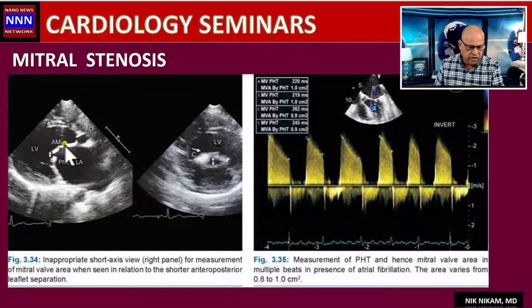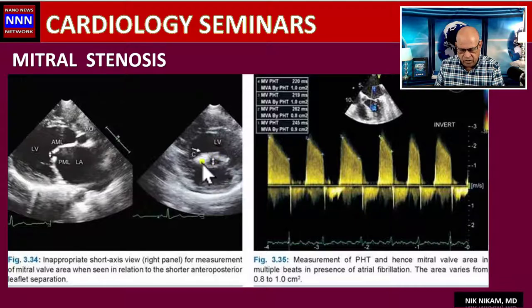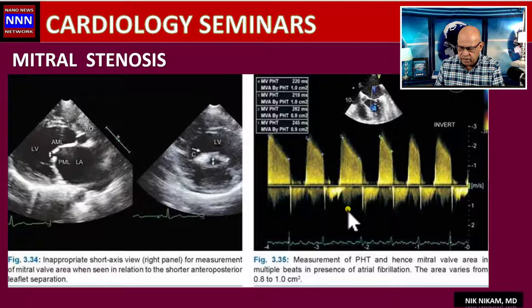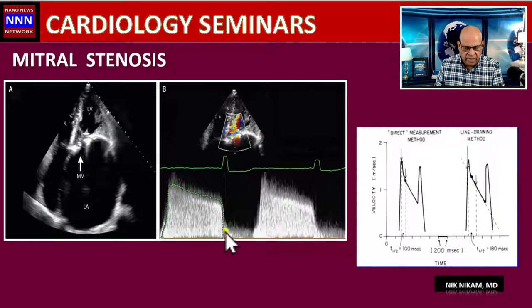Here's an example of mitral stenosis with thickening of the leaflets and doming of the mitral valve. In the cross-section we can see calcification, restricted movement, and a small orifice which we can planimeter. The pressure half-time is usually calculated by the echocardiography machine and used to compute the mitral valve area; however, it may vary from beat to beat. In the apical four-chamber view we can examine leaflet calcification and attachment to the papillary muscles, as well as left atrial size.